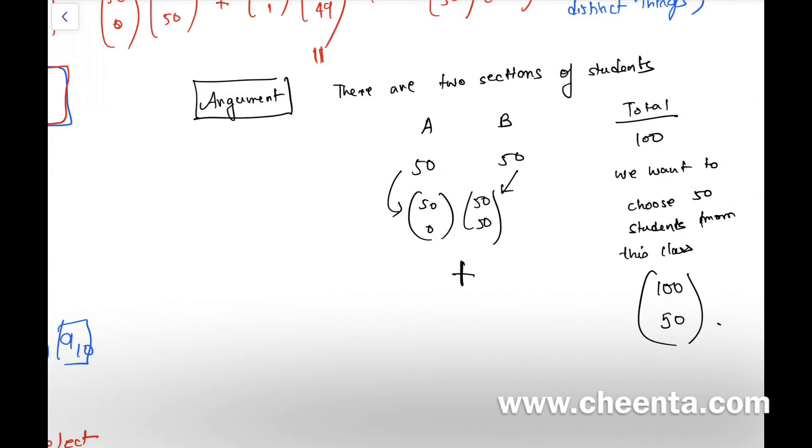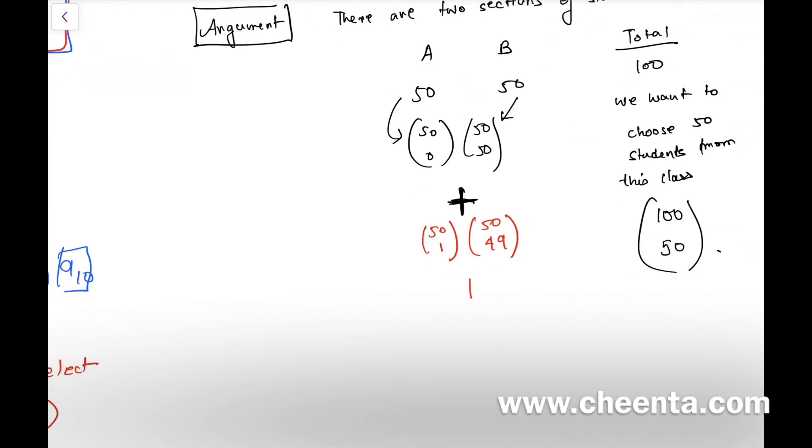Or—so in combinatorics, 'or' means plus—so the next one is you choose one student from the first class, remaining 49 from the second class.